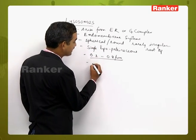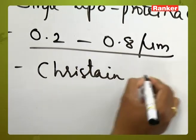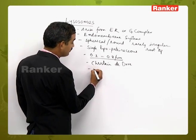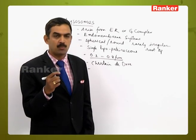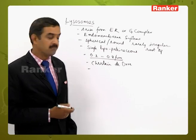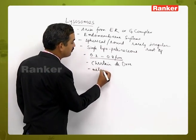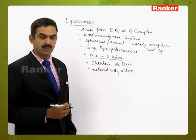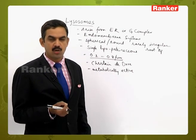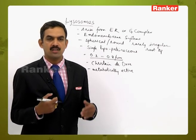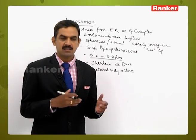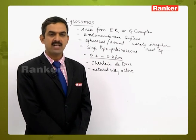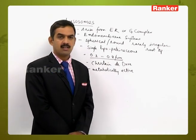Lysosomes were first discovered by scientist Christian de Duve. Their number depends upon the metabolism or functional activities of the particular cell. Generally, cells which are metabolically active contain the highest number of lysosomes — particularly cells undergoing division, such as meristematic cells repeatedly undergoing mitotic division. Since repeated mitotic division is a highly metabolically active mechanism, the number of lysosomes in such cells is very high.